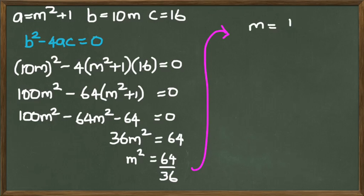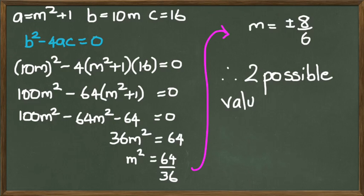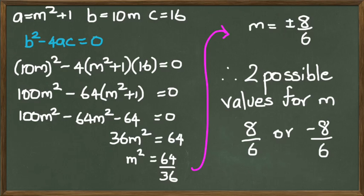Or in other words, m would equal plus or minus 8 divided by 6. So the two possible gradients for this question will be the first one, which is 8 over 6, or negative 8 over 6.